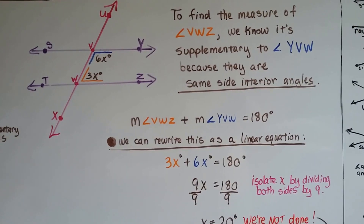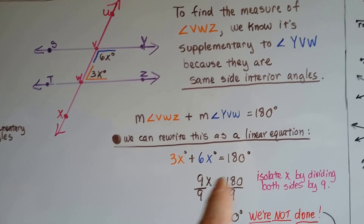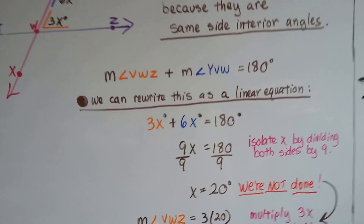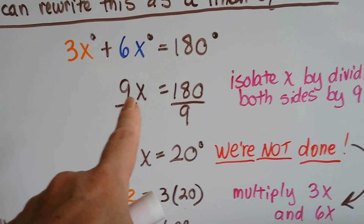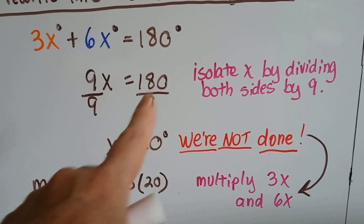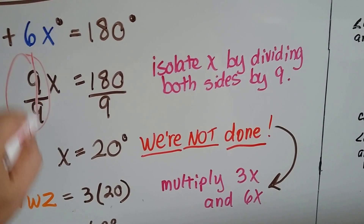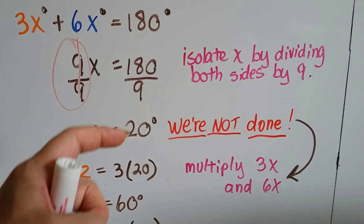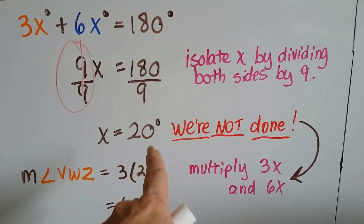We can rewrite this as a linear equation: 3X plus 6X equals 180 degrees. We combine like terms — 3X and 6X — to get 9X. Then we isolate X by dividing both sides by 9. Nine over 9 becomes 1, so we just have X. And 180 divided by 9 is 20, so X equals 20 degrees.